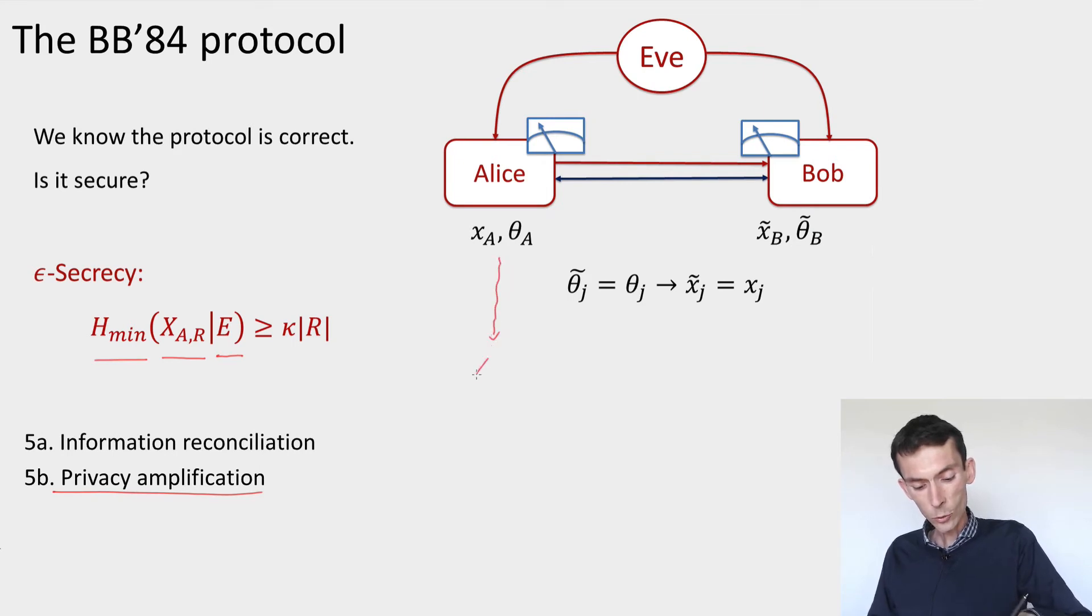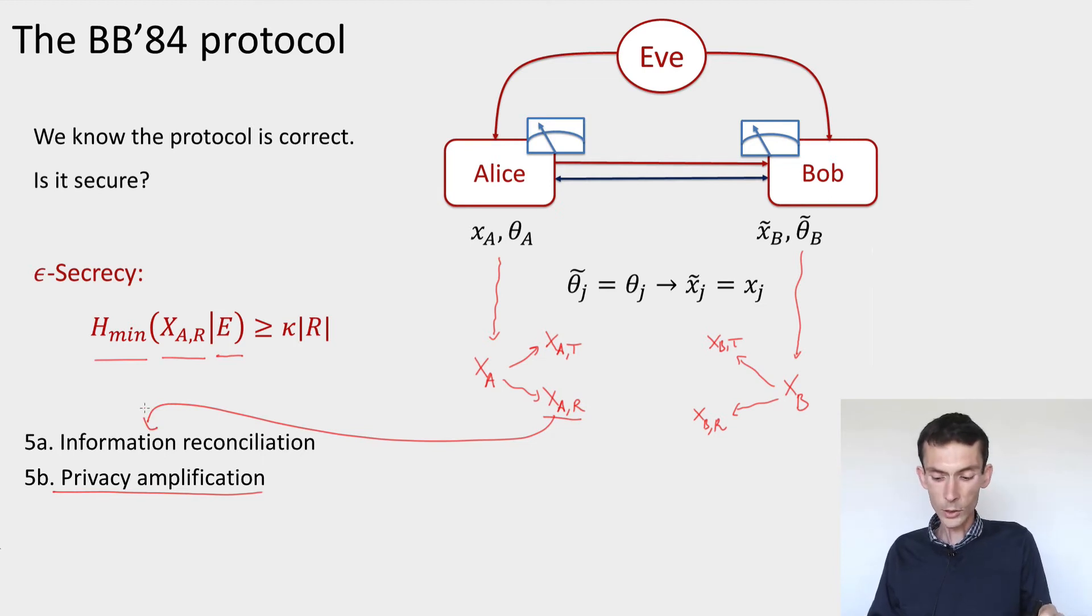In the protocol Alice makes measurements and obtains a string X_A. X_AR is the bits that are not discarded, so ones that correspond to the same choice of basis for Alice and Bob. This string of outcomes is split into two: the bits that are tested, X_AT and X_BT, and the bits that are kept in order to get the key, the raw key bits X_AR and X_BR. These are used to perform information reconciliation and privacy amplification.